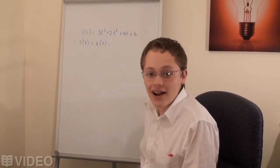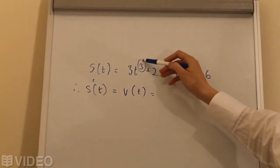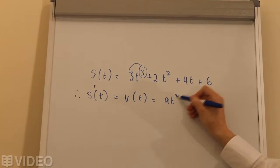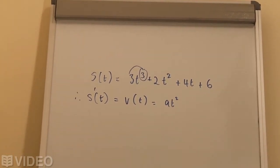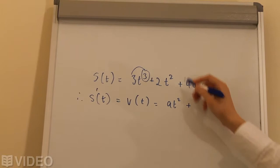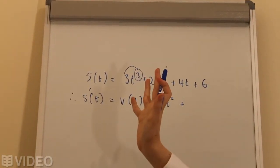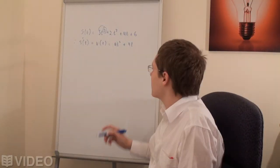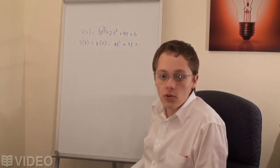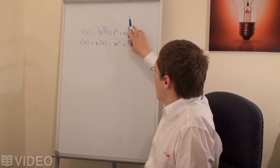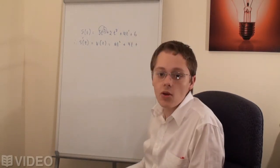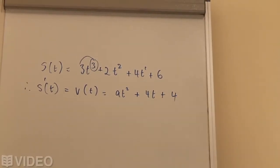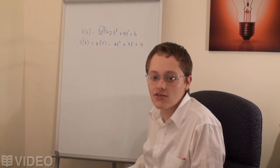So we differentiate. We bring the 3 down — 3 times 3 is equal to 9. We subtract 1 from the exponent, giving 9t². Plus, we bring the exponent down and multiply by the coefficient to get 4t to the power of 1, or just 4t. Then we do the same thing for the next term — we bring the 1 down, multiply by the coefficient, and we just get 4, because t to the power of 0 is equal to 1.